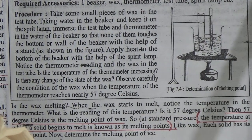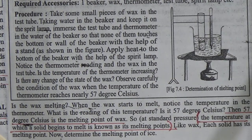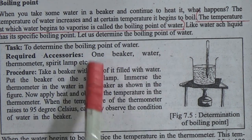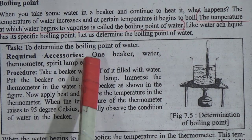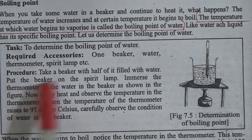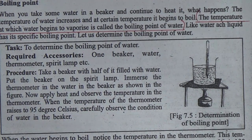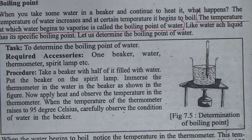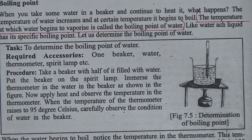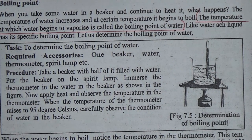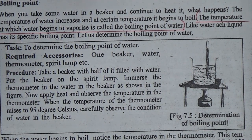Boiling point: The temperature at which water begins to vaporize is called the boiling point of water. To determine the boiling point, take a beaker half-filled with water and place it on a spirit lamp. When we heat water in a pot, after a few seconds it begins to boil. If we place a thermometer in the boiling water, we find the temperature is 100°C — so 100°C is the boiling point of water.